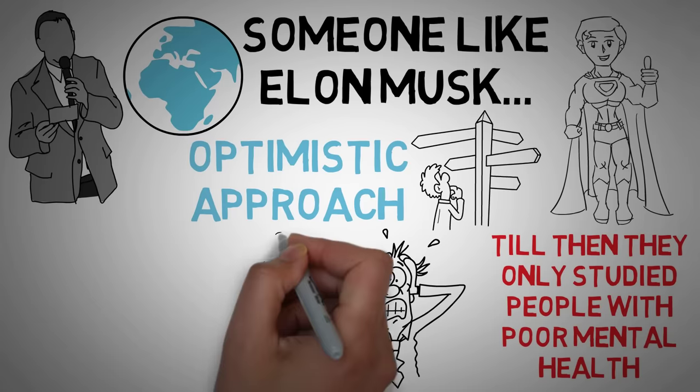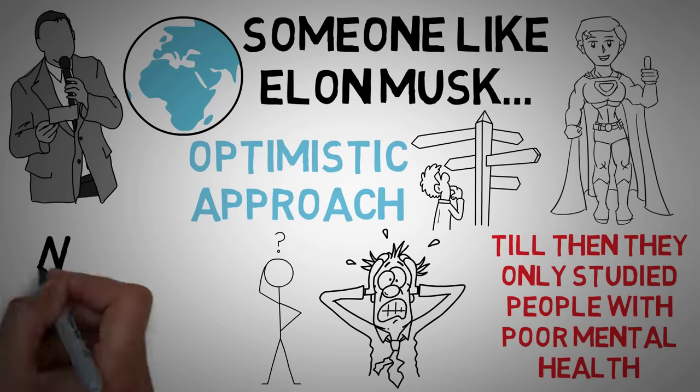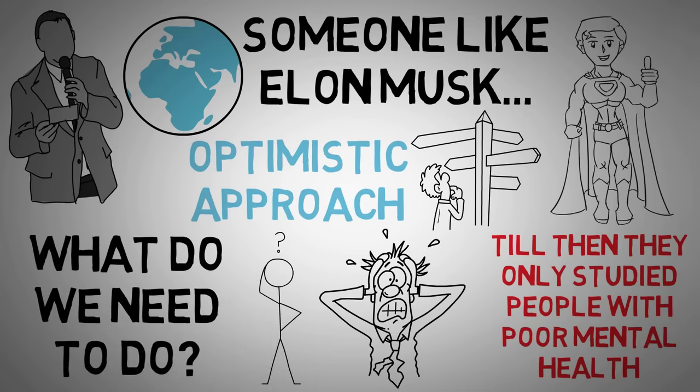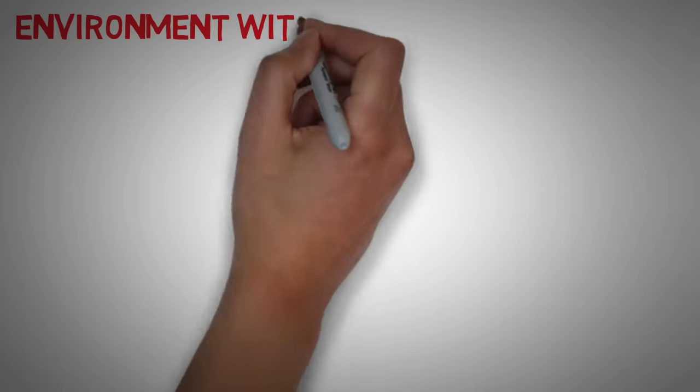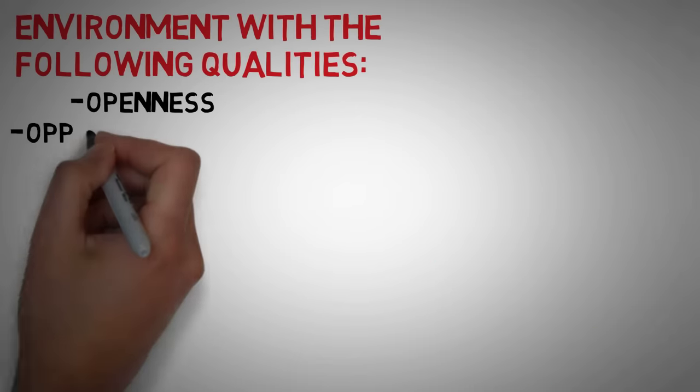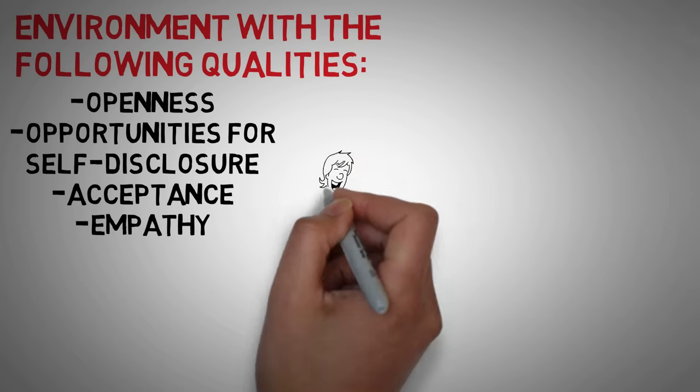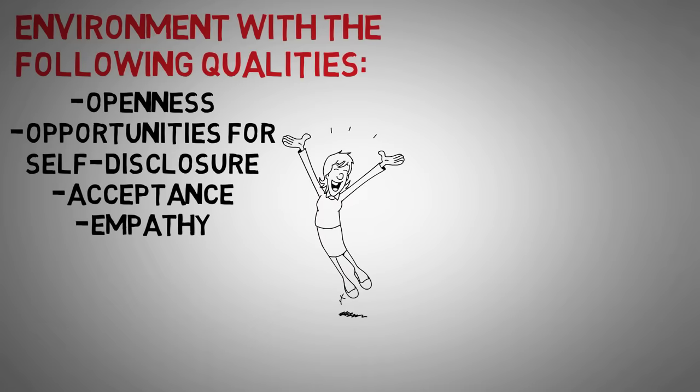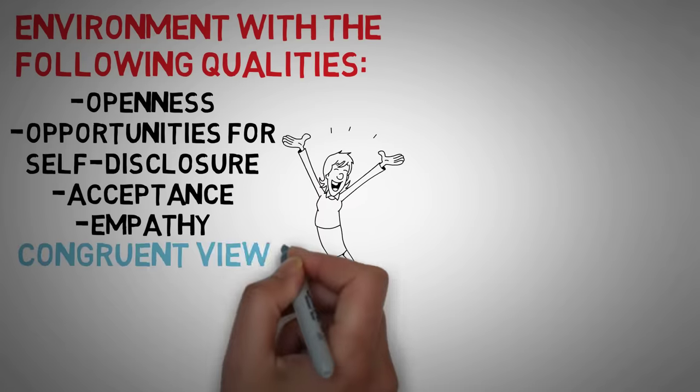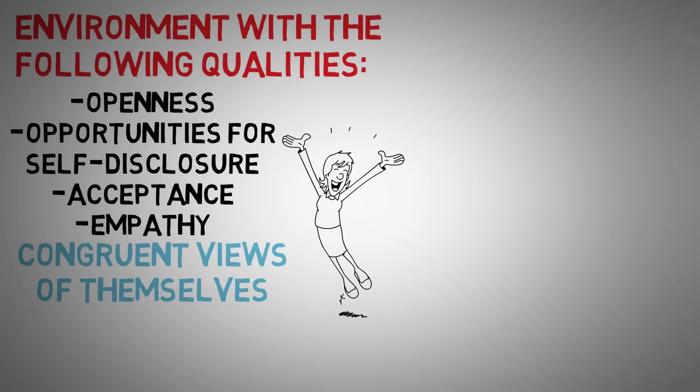So what do we need to actually do to become self-actualized and positive members of society? Carl Rogers concluded that people need to live in an environment with the following qualities: openness, opportunities for self-disclosure, acceptance, and empathy. If someone grew up in this type of environment, they're much more likely to hold congruent views of themselves that actually match how the rest of the world sees them. There's not going to be too much cognitive dissonance.